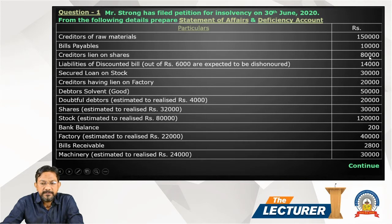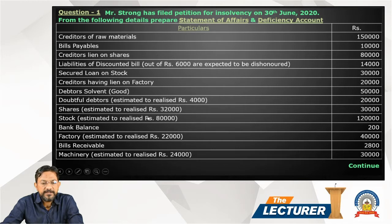The creditors are 80,000 shares. If the value of the creditors' shares comes to 30,000 — that is the book value — and creditors are 100,000, this means we have a partly secured creditor. Mark it accordingly.